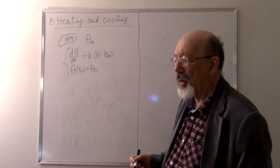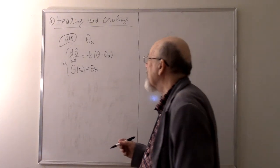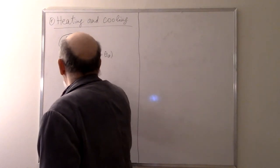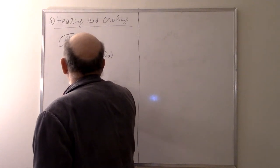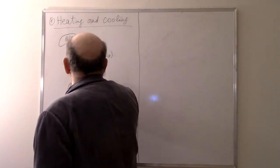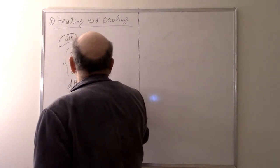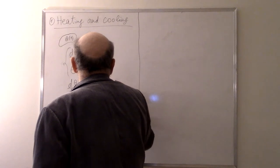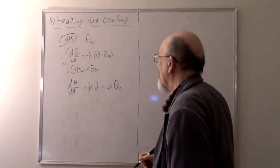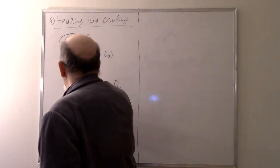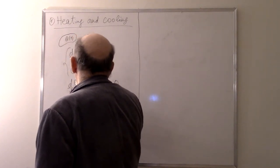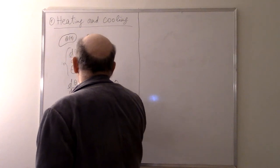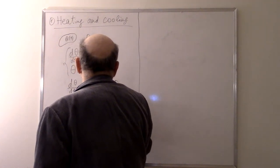It makes no difficulty to solve this problem. Rewrite the equation as dΘ/dt + kΘ = kΘ_A. The integrating factor is m(t) = e^(∫k dt) = e^(kt).